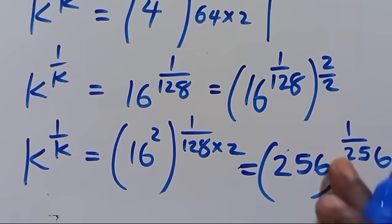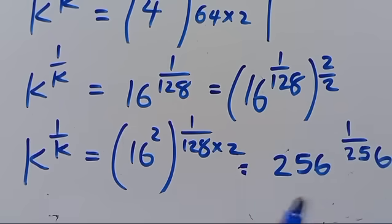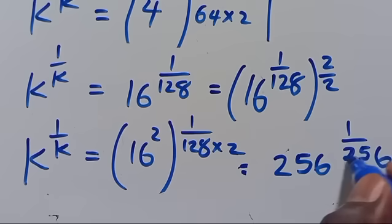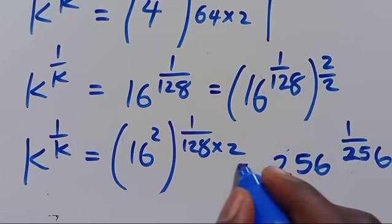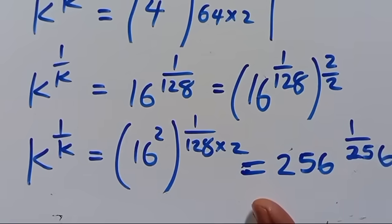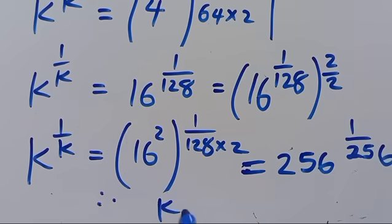They have the same look — even when you cancel through, they have the same look. So therefore, since they have the same look, we can equate either the power or the base. Therefore, K will now be equals 256.